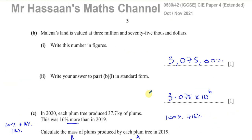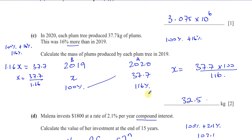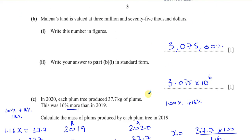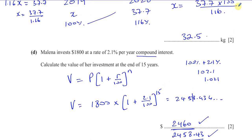That completes question number 1, which is all about basic arithmetic — percentages, ratios, standard form, and compound interest. Other questions from this paper will be found in the playlist that should appear on screen. Other questions on basic arithmetic can be found in the topic-by-topic playlist. You can subscribe to my channel by clicking the link. Thank you for watching and see you soon.